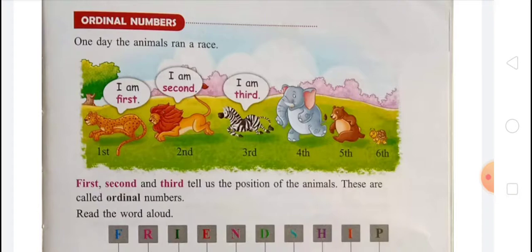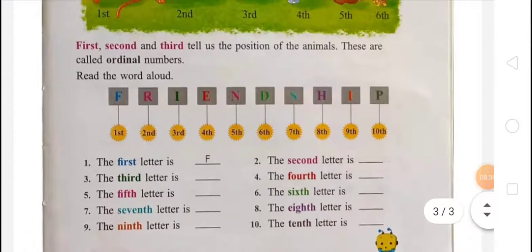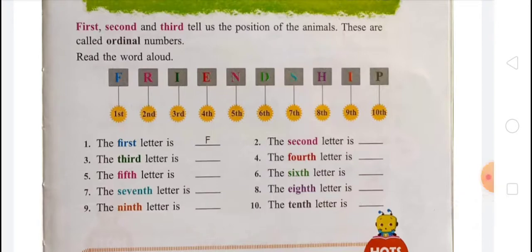What is an ordinal number? First, second, and third tell us the position of the animals. They tell us the position of which animal is where. These are called ordinal numbers.